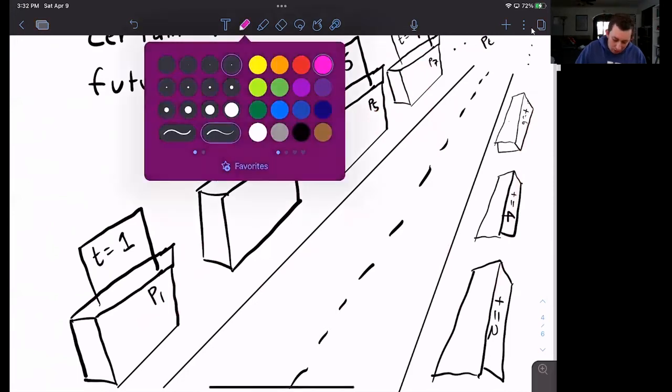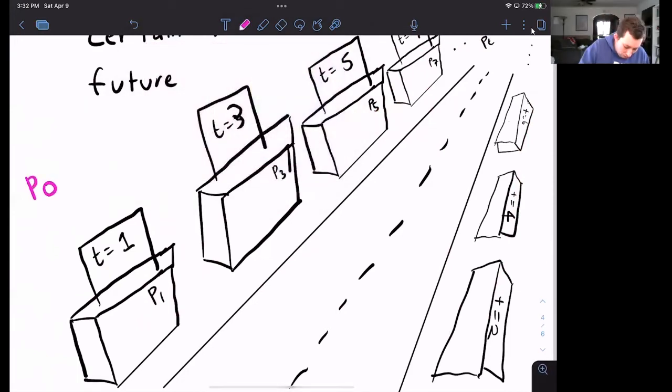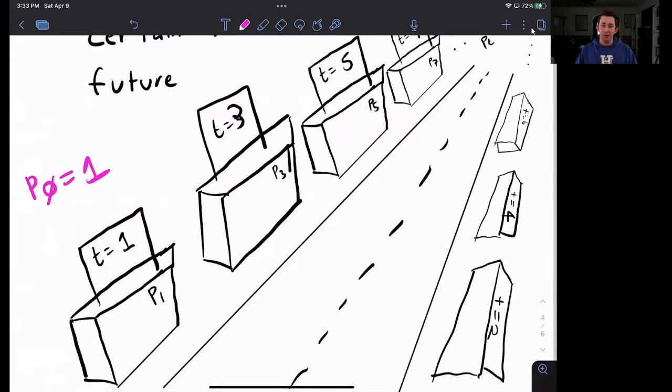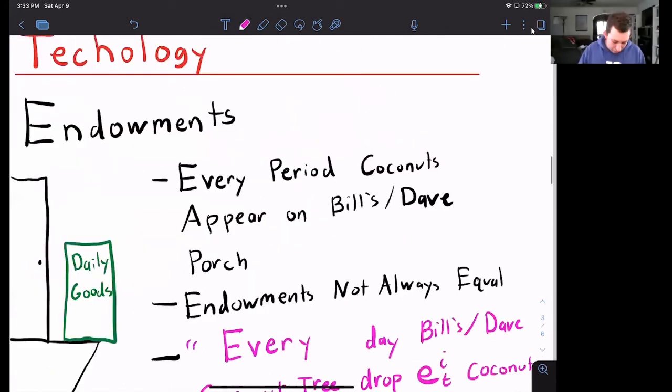And just to make our lives easier, we're going to say that the price of a coconut at time zero is equal to one, so that we can think about the prices relative to the price of a coconut at time zero. Now that we know this information and how this trade works, let's go back to the budget constraint and fill that in.